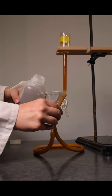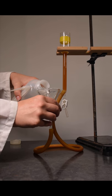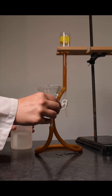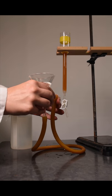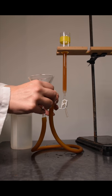Hold the funnel and the end of the tubing. Fill the funnel and tubing with deionized water. Gently raise the funnel up and down to remove any bubbles.